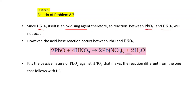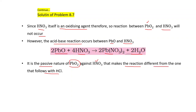With HNO₃, since HNO₃ itself is an oxidizing agent, the redox reaction between PbO₂ and HNO₃ does not occur — both are oxidizing agents. Only the acid-base reaction occurs: PbO + 4HNO₃ → Pb(NO₃)₂ + 2H₂O. PbO₂ remains unchanged (passive) with HNO₃, which is why the products differ from the reaction with HCl.